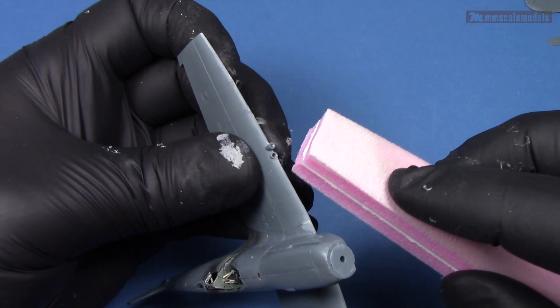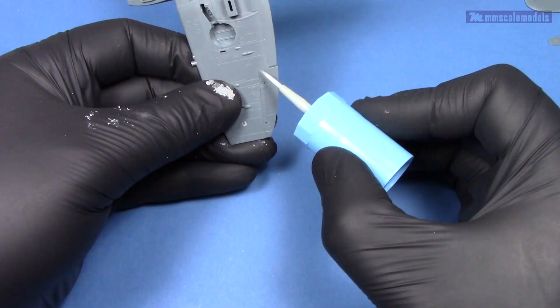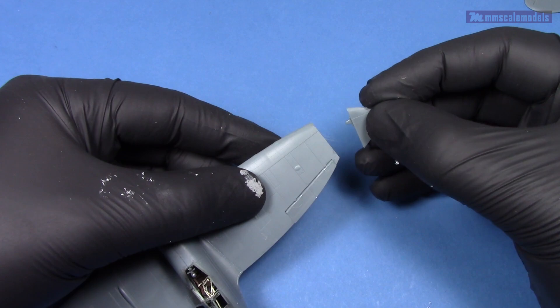What is not so common is that the trailing edges need no work whatsoever. Partially because the ailerons are molded in one piece and also because Edward cleverly facilitated the flaps to hide the rest of the trailing edge seam.